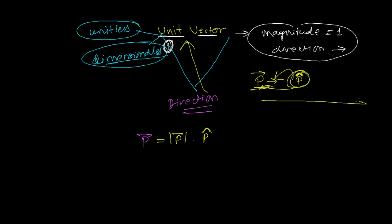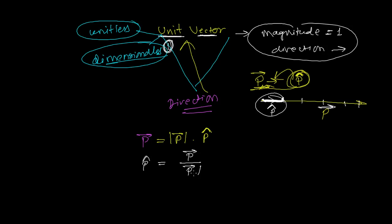If this is vector p, the unit vector represents one unit distance in the direction of p. If on a number line one unit distance is marked, then the unit vector points in the direction of p with magnitude one. The unit vector of p is written as: vector p divided by the magnitude of vector p.